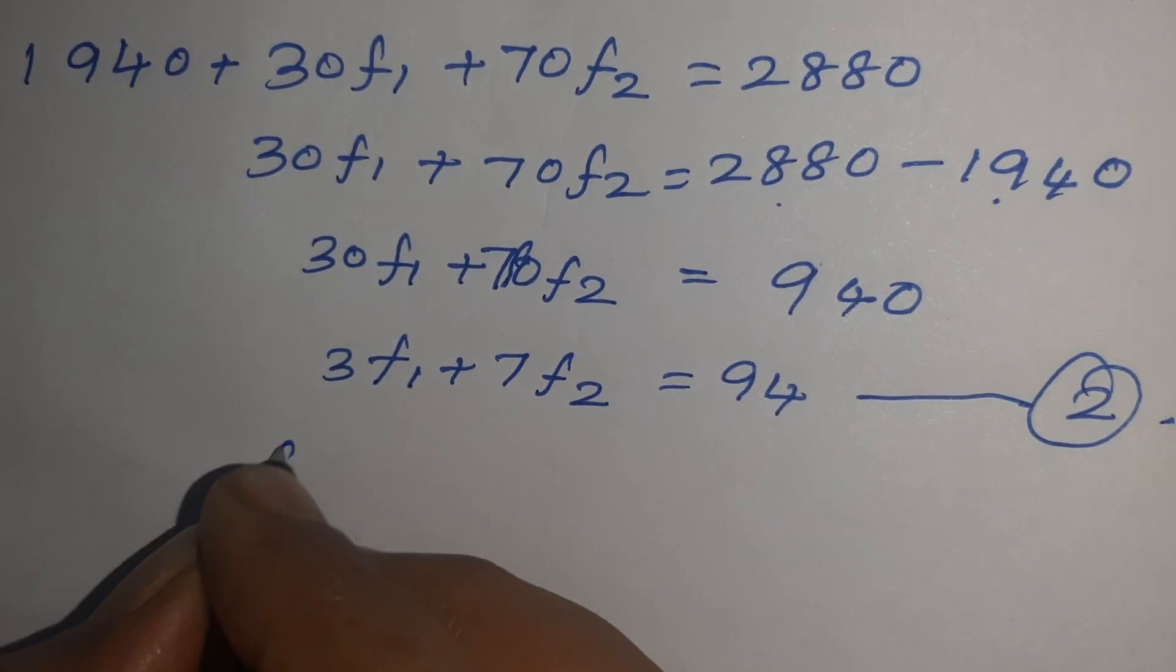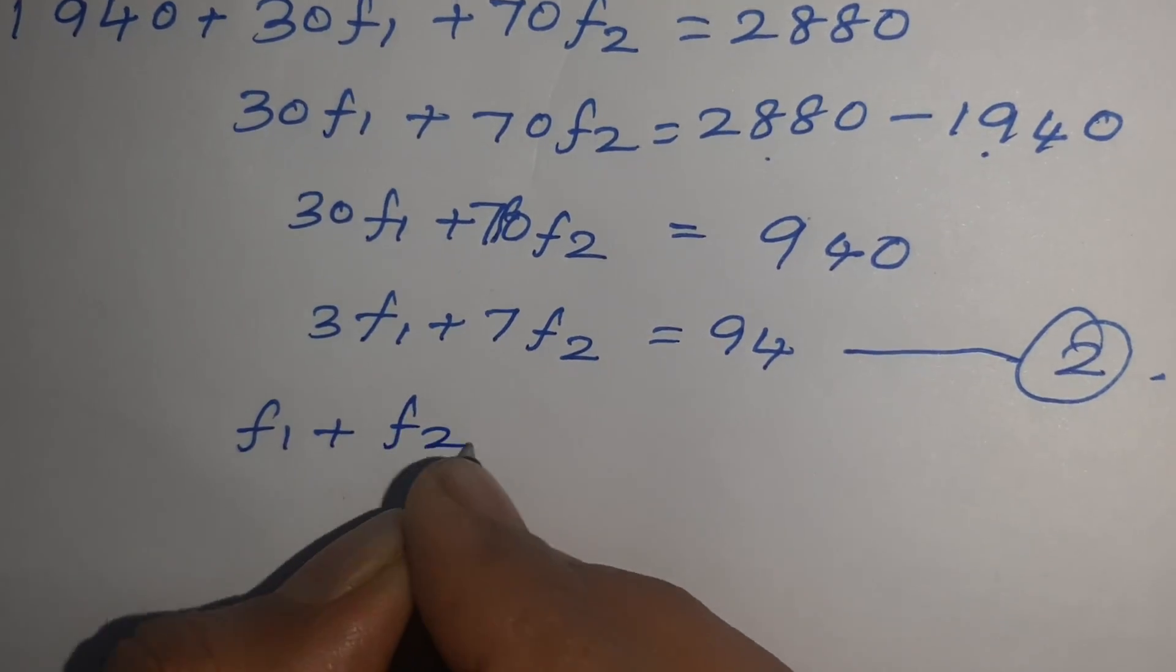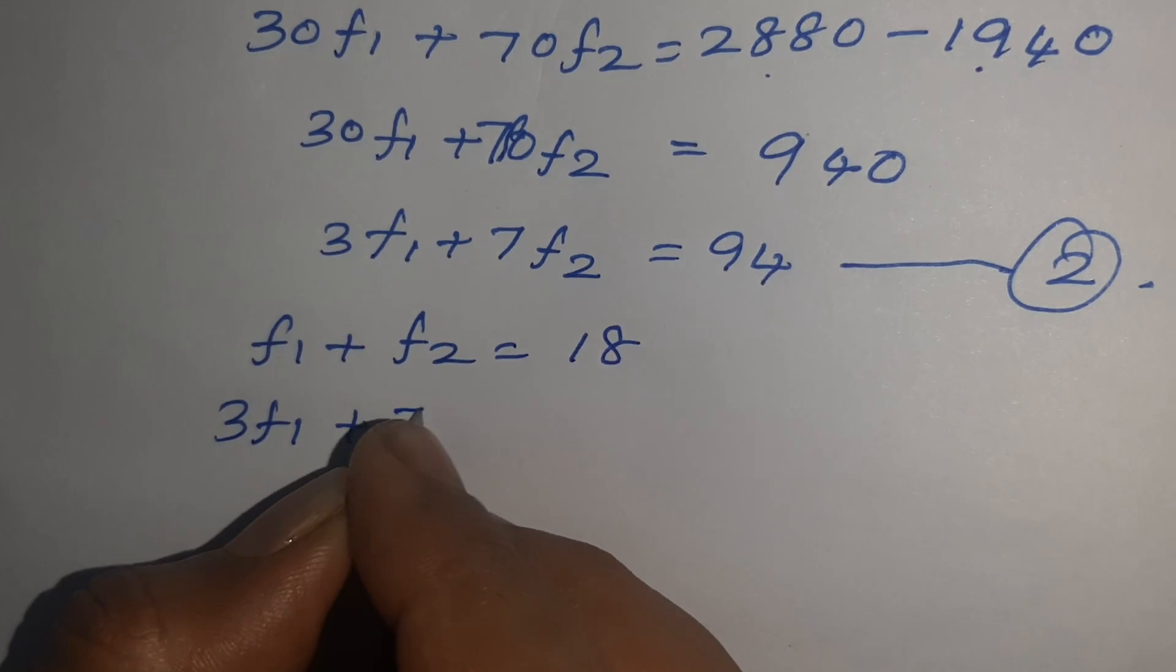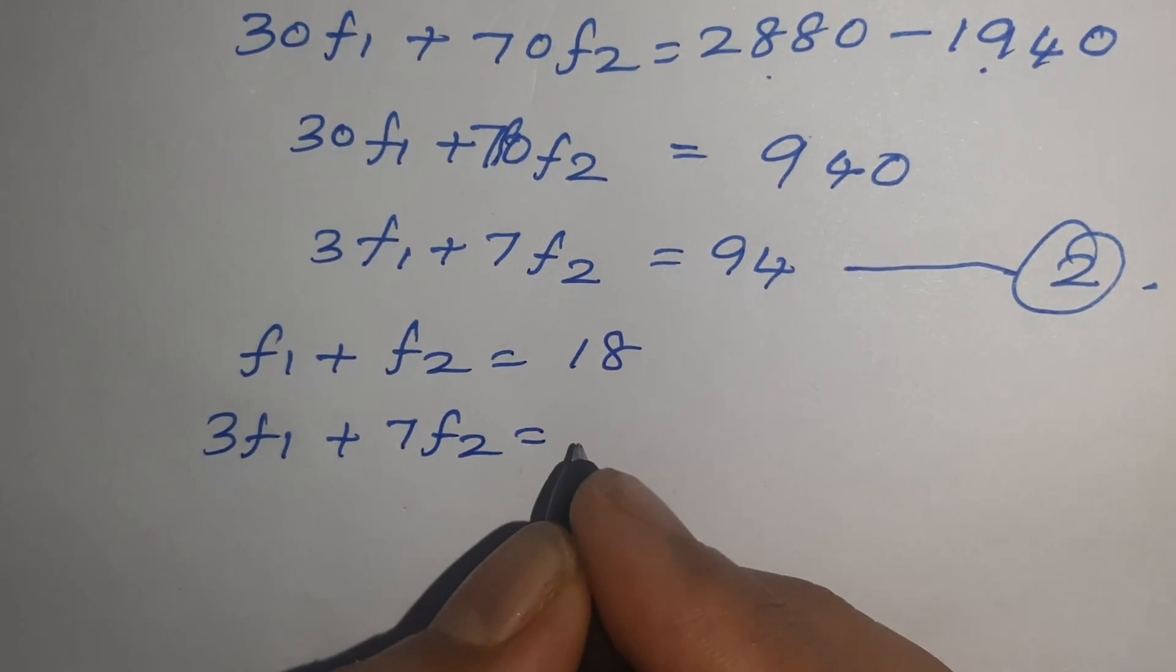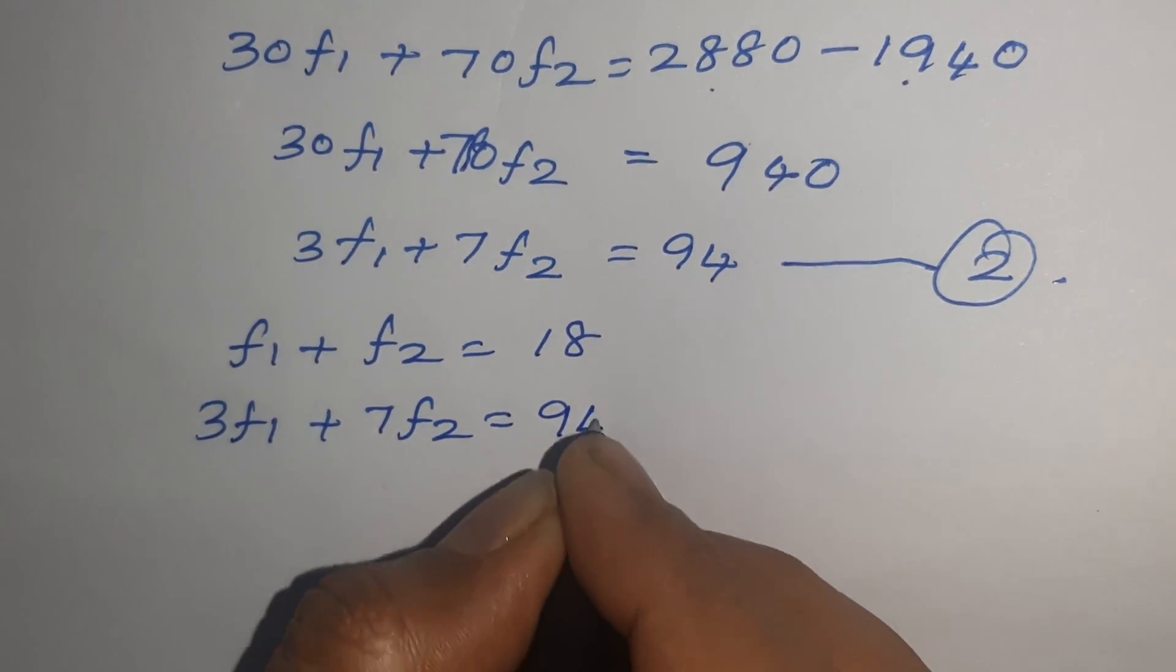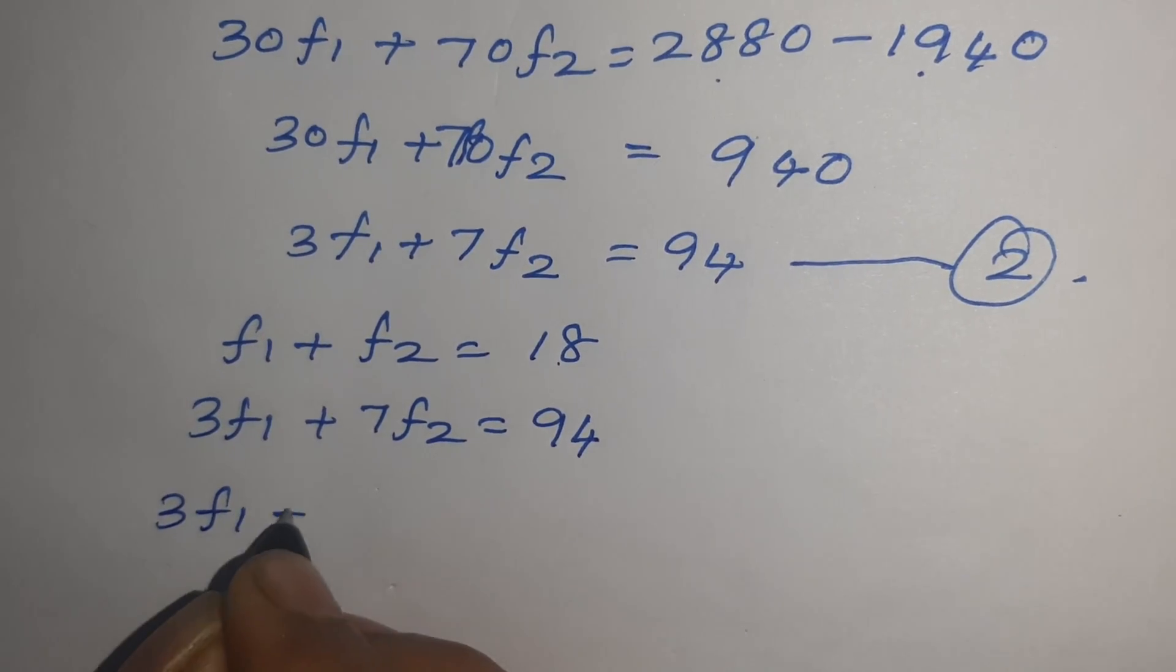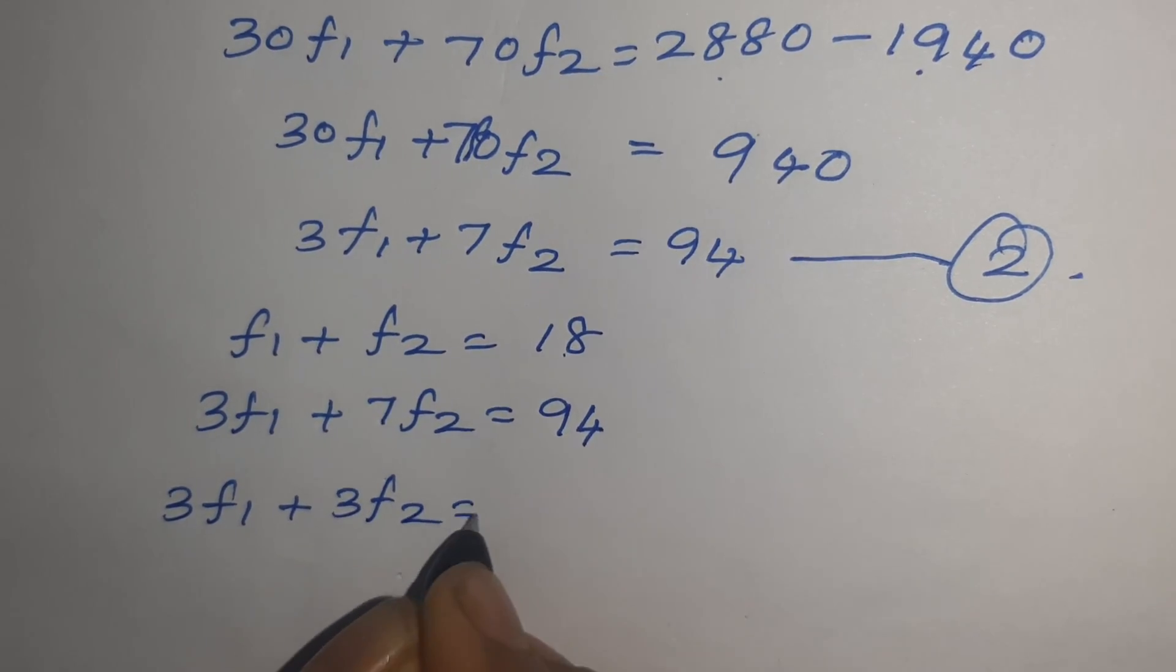First equation is F1 plus F2 equals 18. Second one: 3F1 plus 7F2 equals 94. First equation you have to multiply by 3. So 3F1 plus 3F2 equals 54.